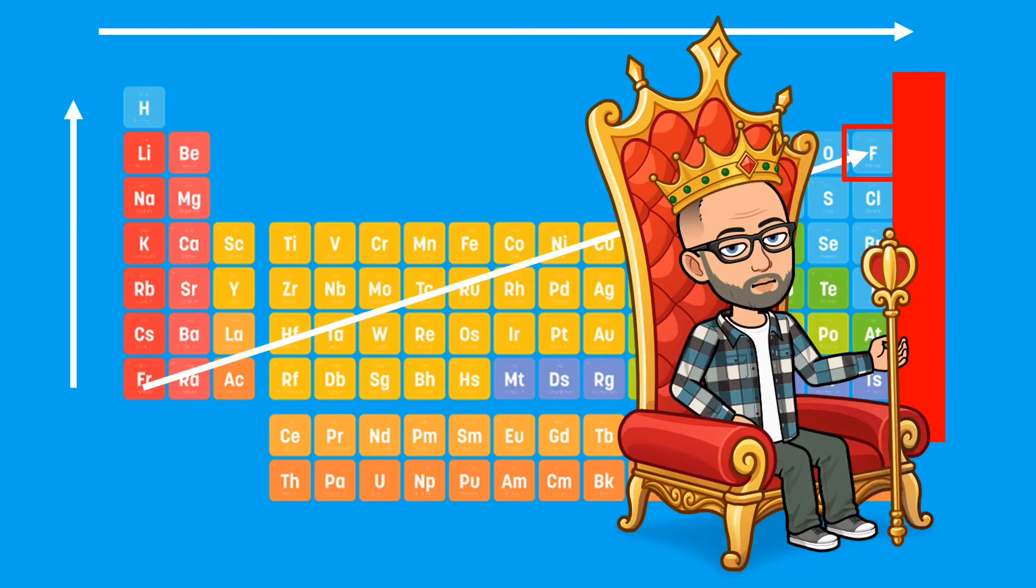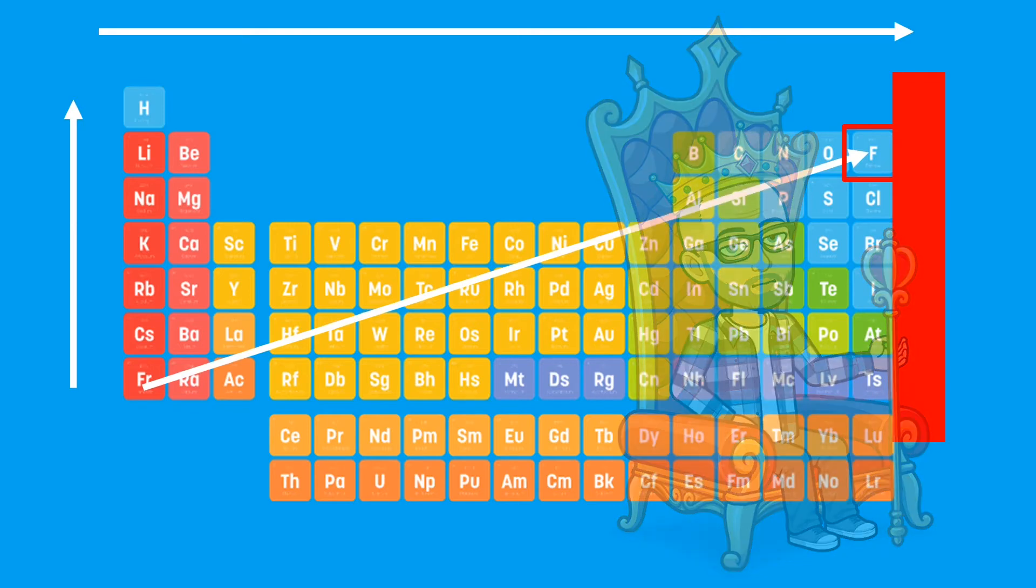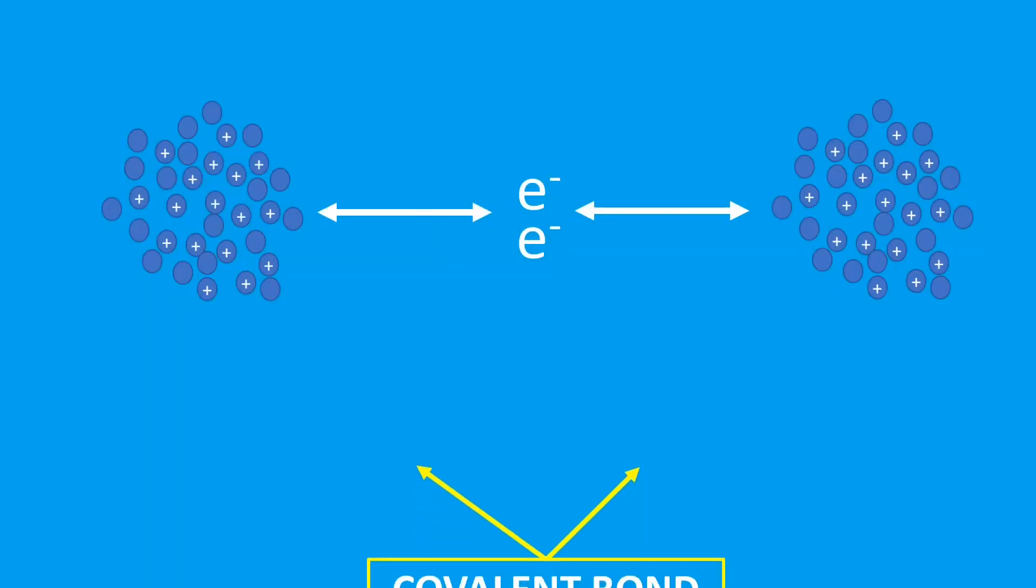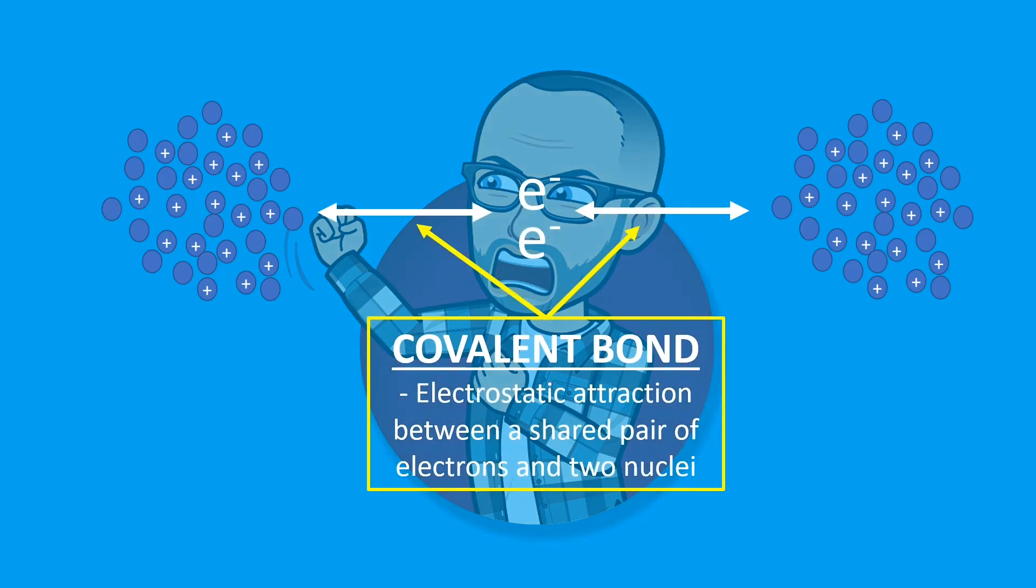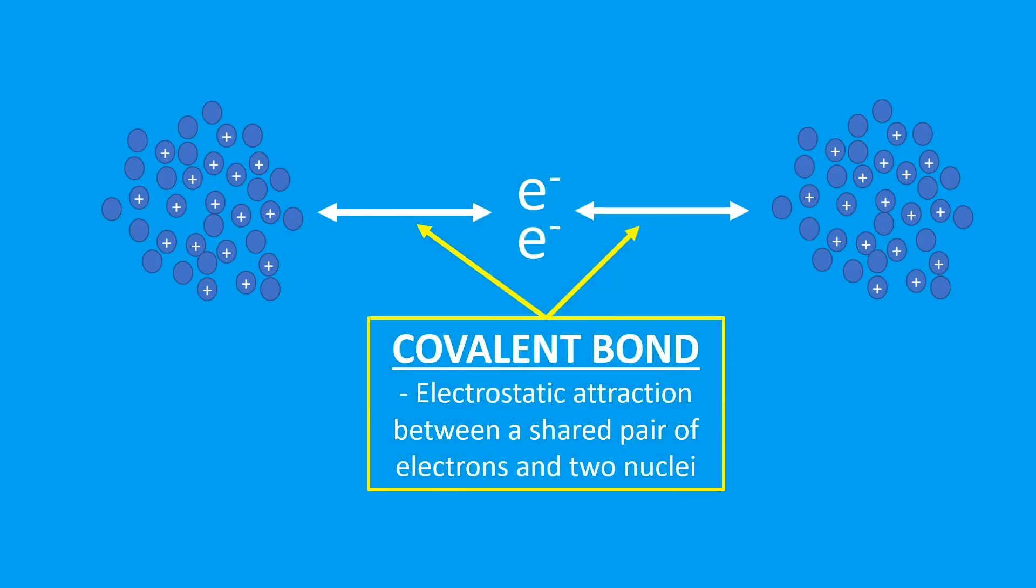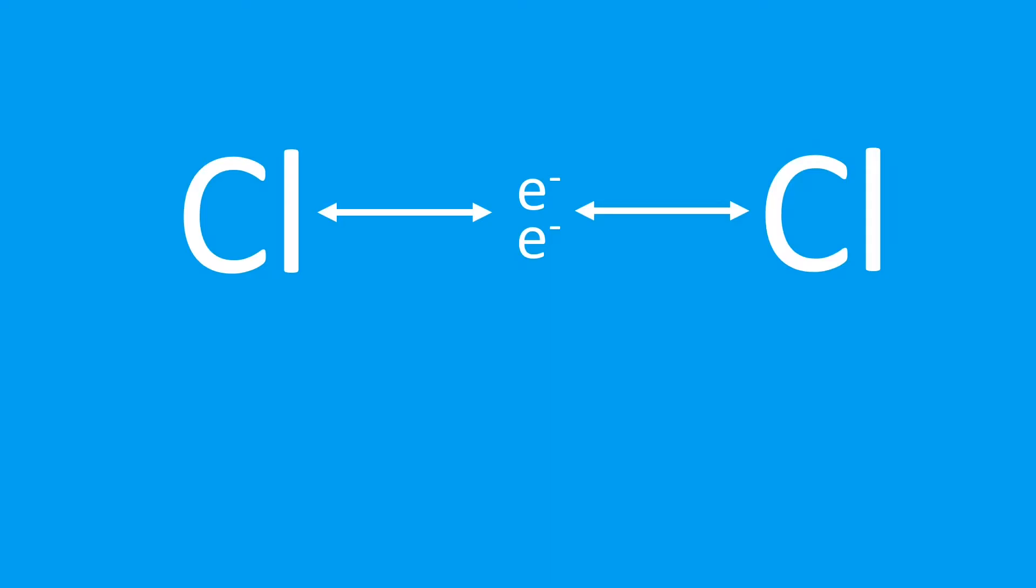A covalent bond then - so here we have a shared pair of electrons between two nuclei, and that pair of electrons is attracted to both nuclei. So it's kind of like a tug of war - we've got a pair of electrons stuck between the two nuclei. Now if we were to look at those two nuclei being chlorine, then they are both identical elements.